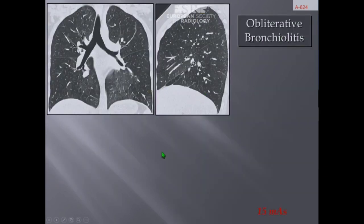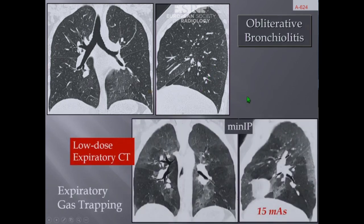Sometimes it is extremely difficult to perceive this heterogeneity in attenuation. If there is any doubt or a clinical indication, particularly in obstructive lung disease with a functional test suggesting obstruction, you have to proceed automatically to expiratory CT. Using thick slabs with minimum intensity projection, we do not need a lot of dose — a low dose is sufficient because we have an increased signal-to-noise ratio using larger slab thickness — and we have a beautiful display of the distribution and extent of gas trapping.